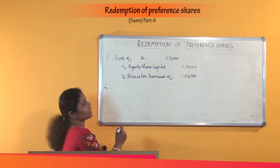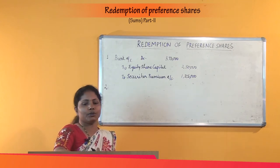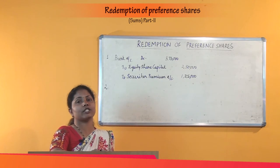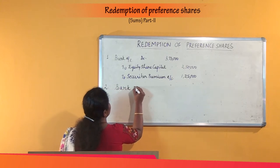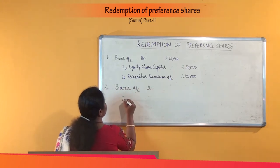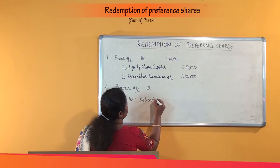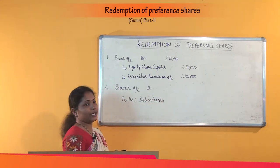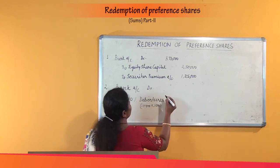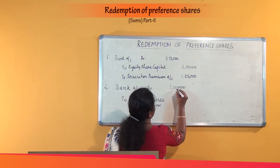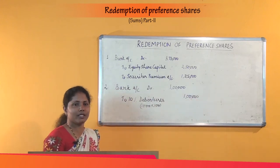Under the same step, we have to pass the entry for issue of debentures. The company issues 1,000 10% debentures of rupees 100 each. The entry is: Bank Account debit, to 10% Debentures Account. The debentures are issued at par — 1,000 debentures at rupees 100 each — so rupees 1 lakh is the proceeds from fresh issue of debentures. This is the entry for issue of debentures at par.